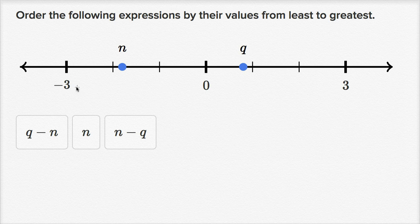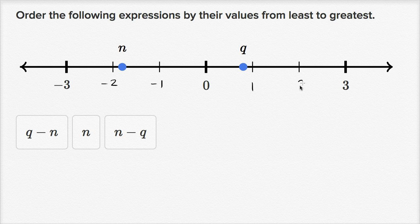Just to get our bearings: three hash marks to the left of zero is negative three, so each hash mark represents going down by one. So this must be negative one, negative two, and then negative three. As we go to the right, each hash mark increases by one: zero, one, two, and then three.